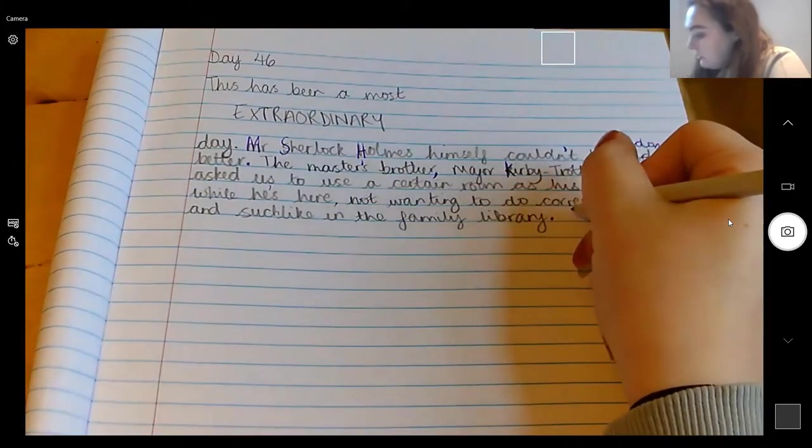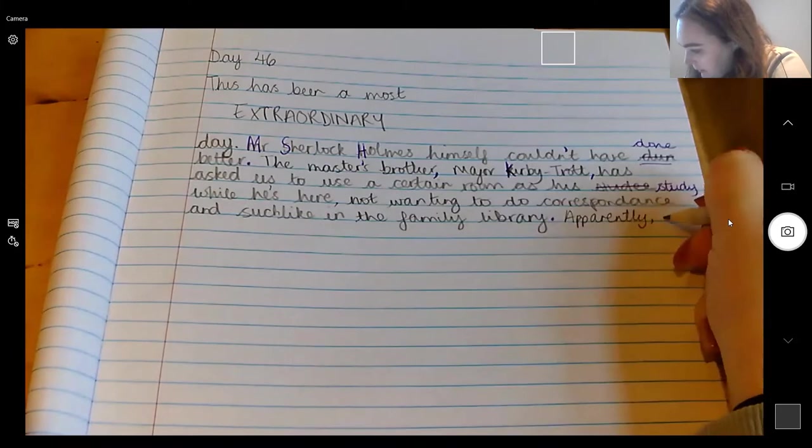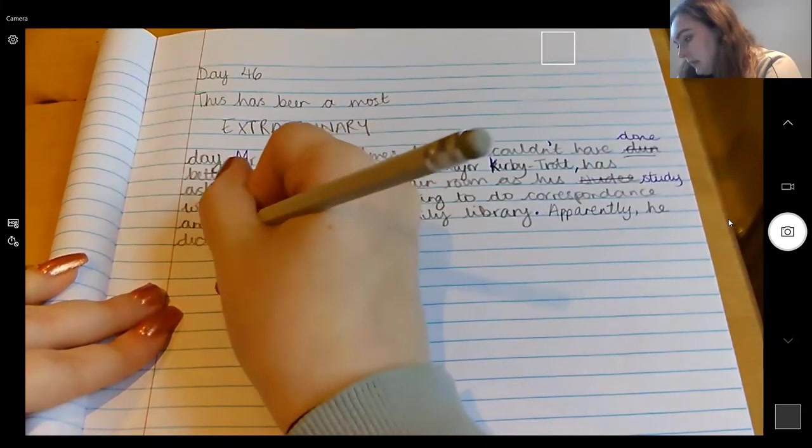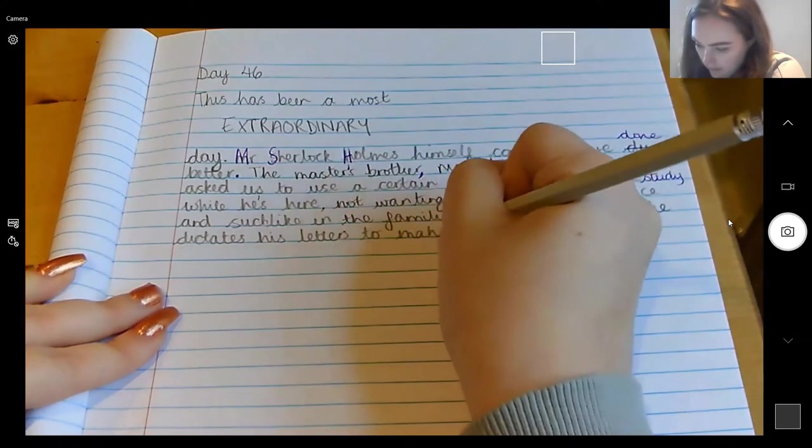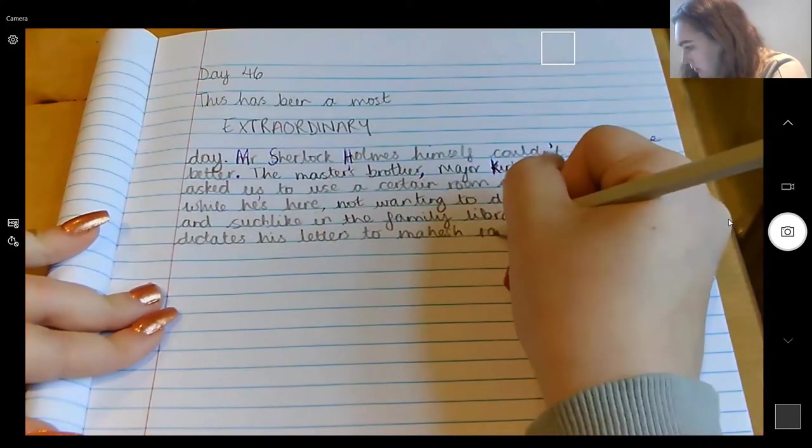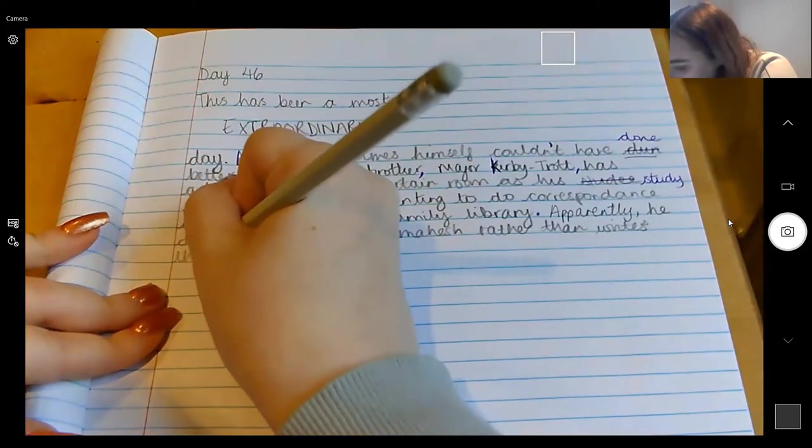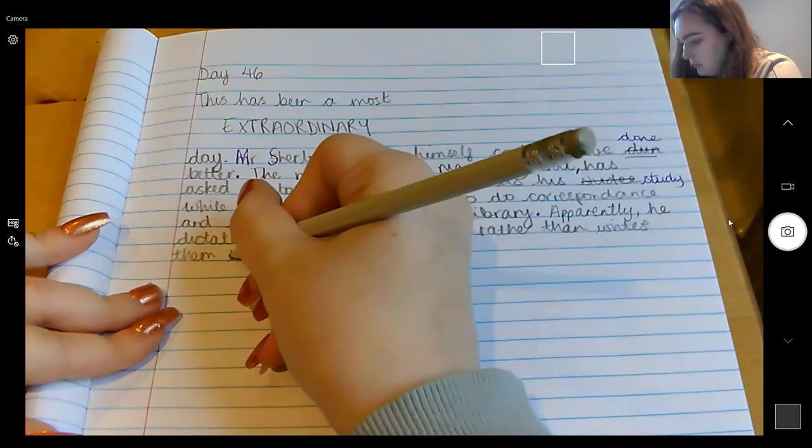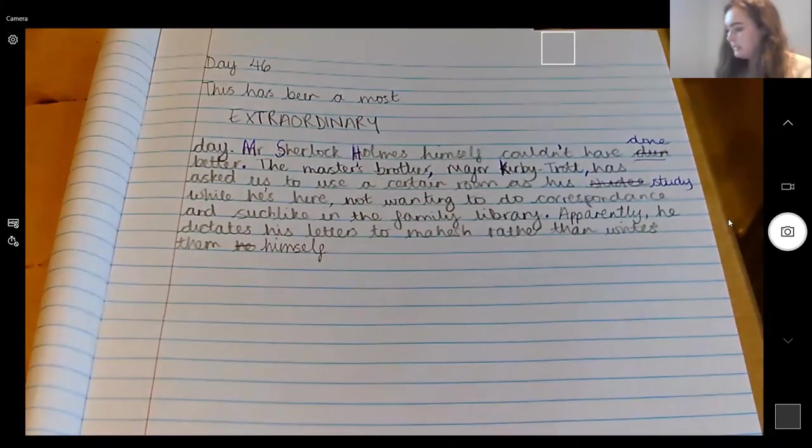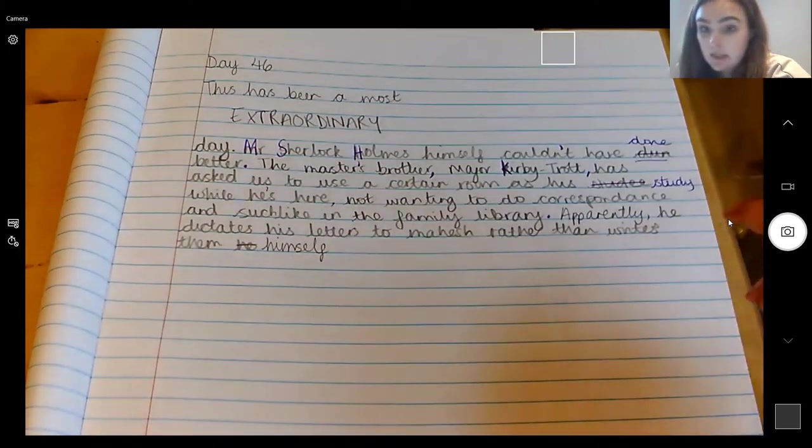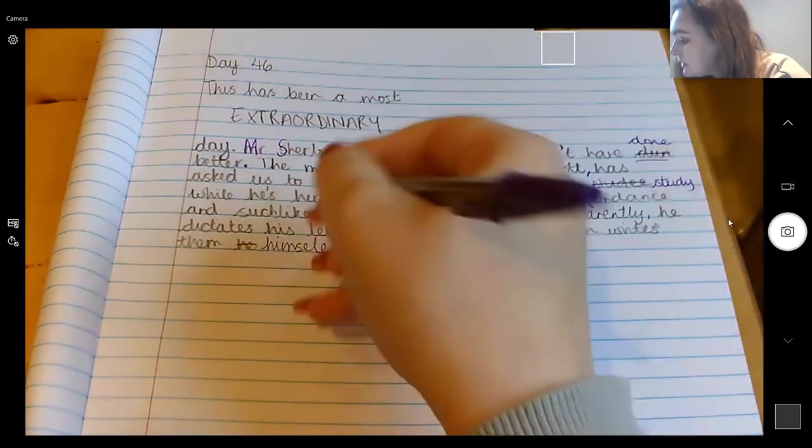So after that bit it is about him dictating letters, so apparently he dictates his letters to Mahesh rather than writes them himself. Okay, apparently he dictates his letters to Mahesh rather than writes them himself. I wonder if we made any mistakes here. Let's have a look. That looks fine. That looks fine. Oh, Mahesh needs a capital M because it is a name rather than writes them himself. So we need a full stop here.